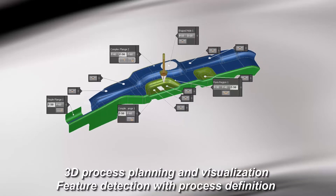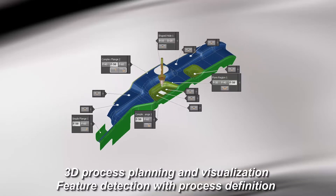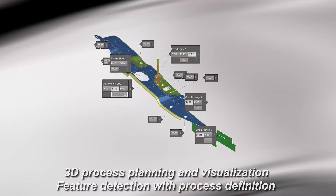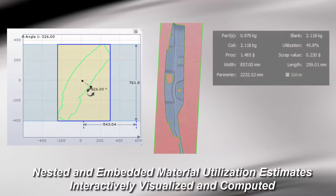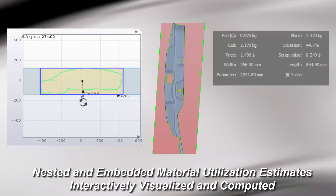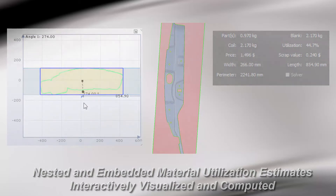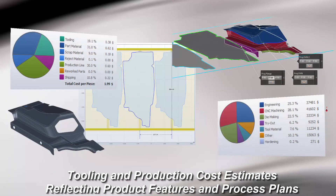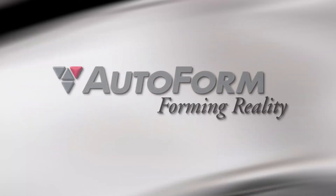Visualization with 3D feature detection and process definition, blank estimation with nesting and embedding for material utilization estimates, complete tool, material, and production cost estimates based on product features and process plans. Autoform Forming Reality.